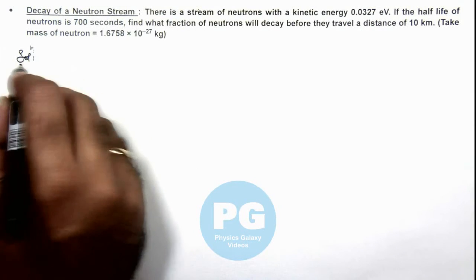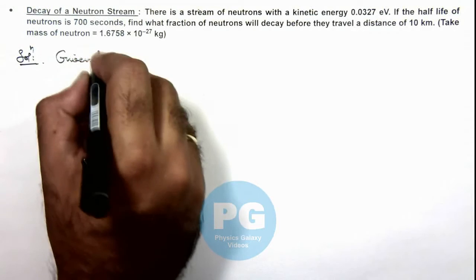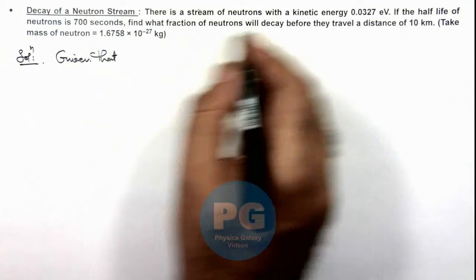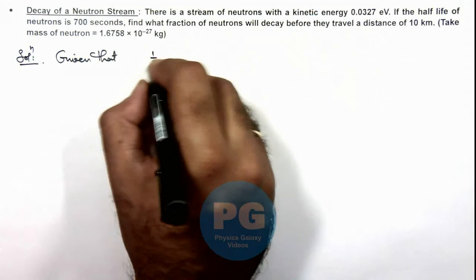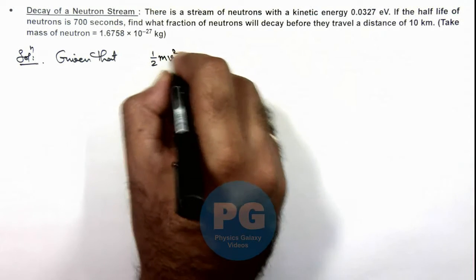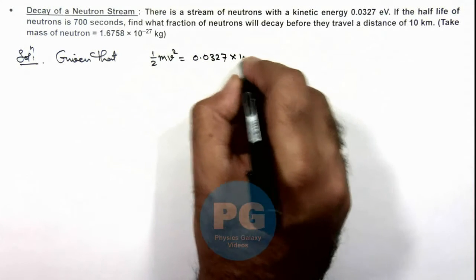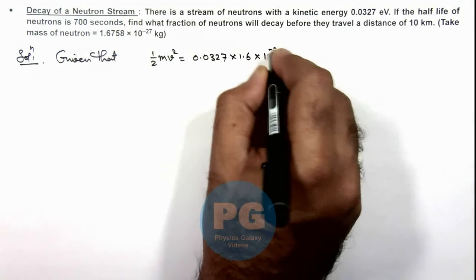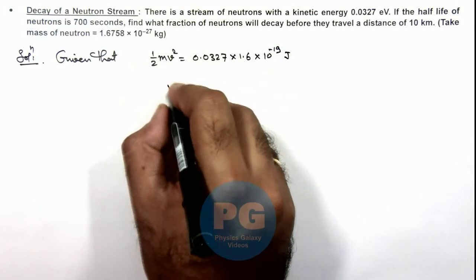Here in solution, we can see we are given that the kinetic energy of this neutron stream is 0.0327. So we can write: half m v squared equals 0.0327 multiplied by 1.6 × 10^(-19) joules. On simplifying we get the value of speed.